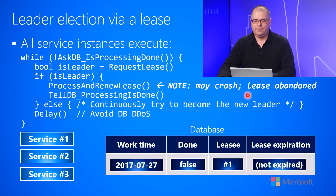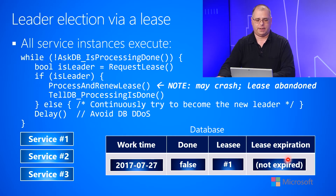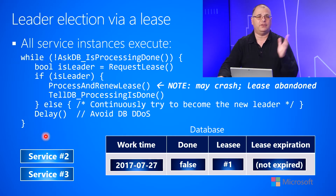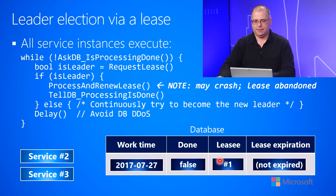There's also the chance that instance one may crash. When it crashes, the lease will eventually become expired. Here you can see service instance one has crashed, and the next thing that happens is this lease will eventually expire.